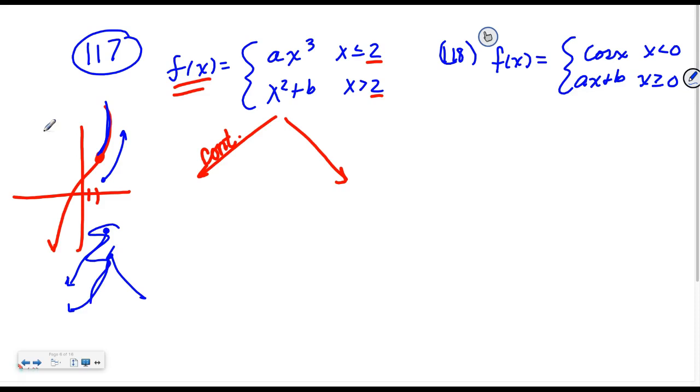So I'm going to make them meet by doing our continuity force, which means I'll plug 2 in and say A times 2 cubed, that y value has to be equal to 2 squared, or 4 plus B. That gives me 8A has to equal 4 plus B.